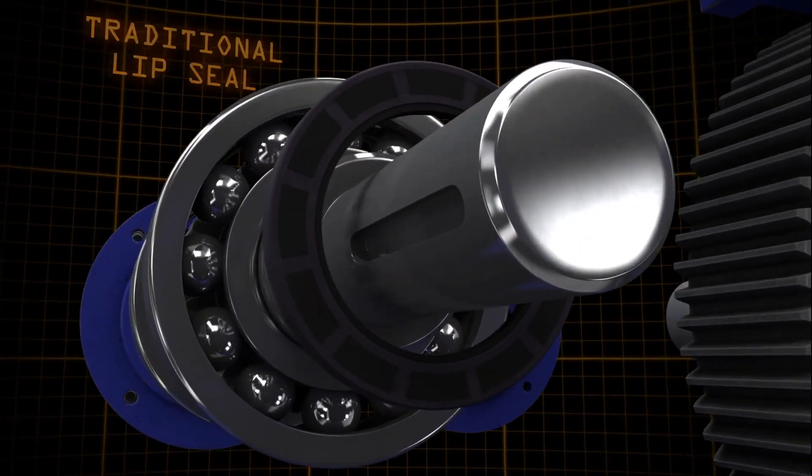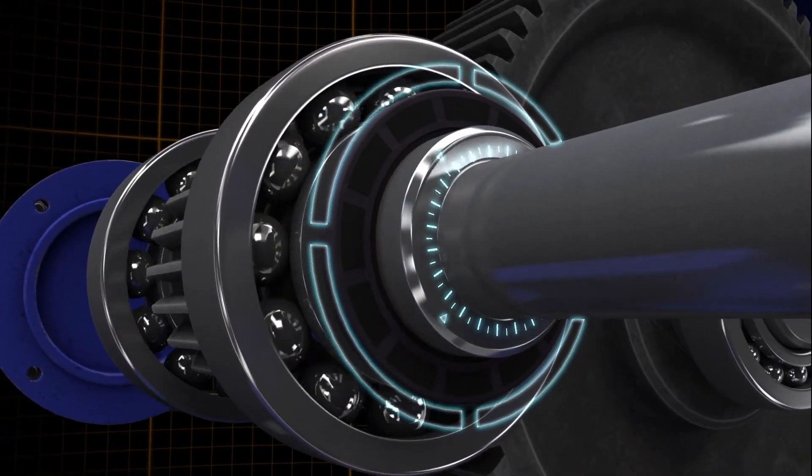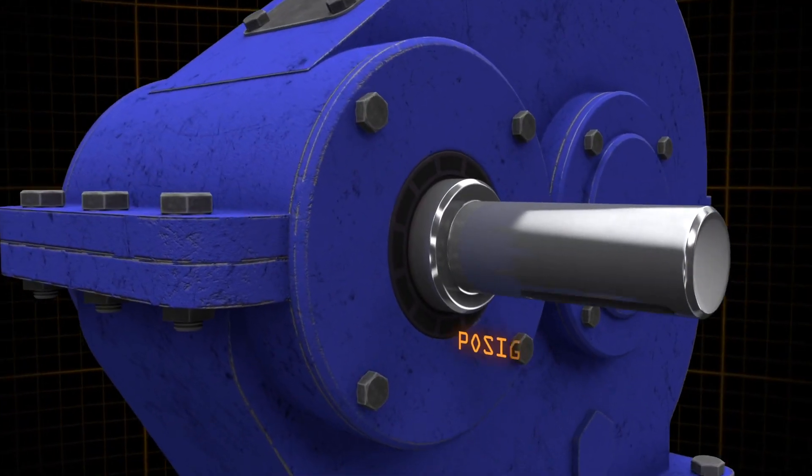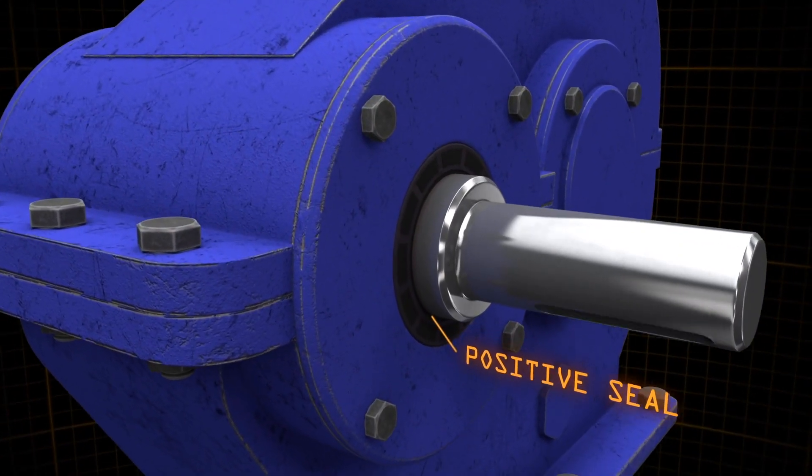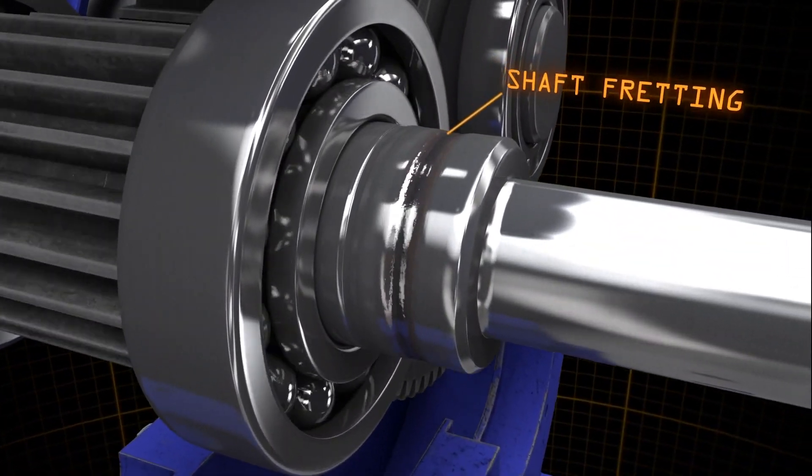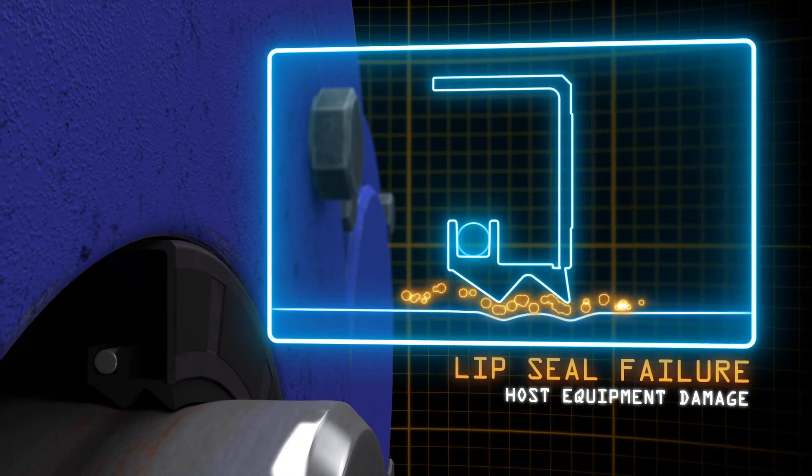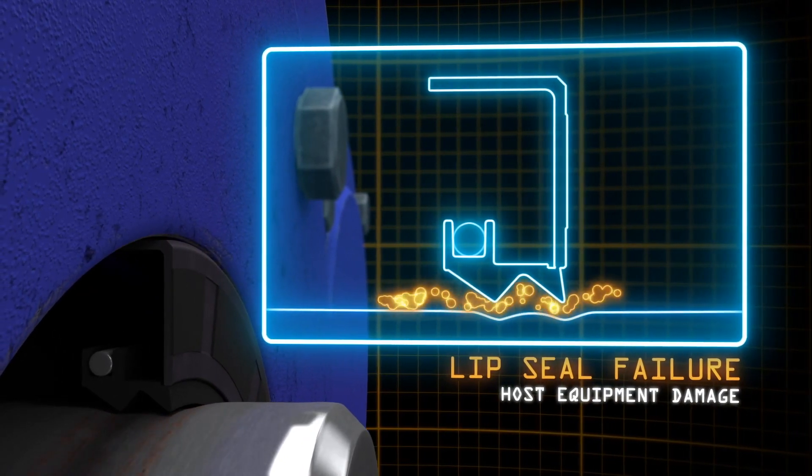Traditional lip seals use the rotating shaft as their primary sealing surface. While this solution created a positive seal, the resulting friction would over time create fretting along the shaft, allowing lubricants to escape and contaminants to enter.